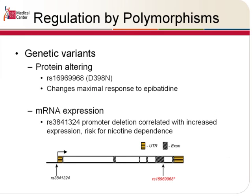The gene itself — we already know through the genome-wide association studies that there are polymorphisms in there that confer susceptibility to these genetic diseases. The first one and the one most commonly linked to Alpha-5 is the protein coding variant RS-169-69968. This is a non-synonymous variant. It changes the maximal response to cytisine, but I don't think that it's been characterized in the context of nicotine or acetylcholine.